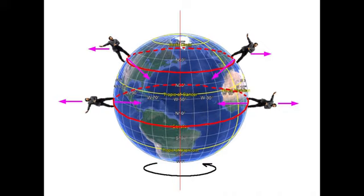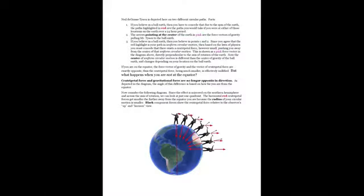Three, if you believe in a ball Earth, then you believe in points one and two. Since you agree that the red highlight is your path in uniform circular motion, then, based on the laws of physics, you must concede that there exists a centripetal force, however small, pushing you away from the center of that uniform circular motion. This is shown as a pink force vector in the diagram above, directly perpendicular to the axis of rotation of the Earth. Note, the center of uniform circular motion is different than the center of gravity of the ball Earth and changes depending on your location on the ball Earth.